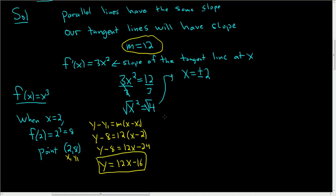Now let's look at the case when x = -2. We can find the y coordinate by evaluating f(-2) = (-2)³ = -8. So the point in this case is (-2, -8).